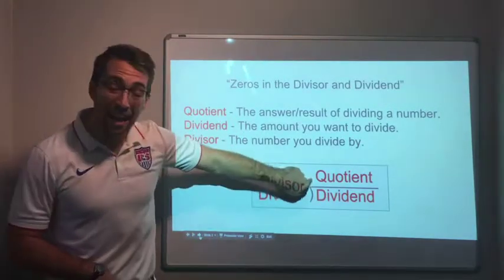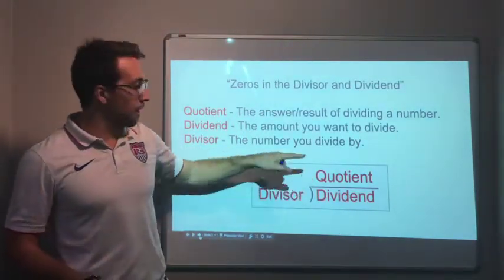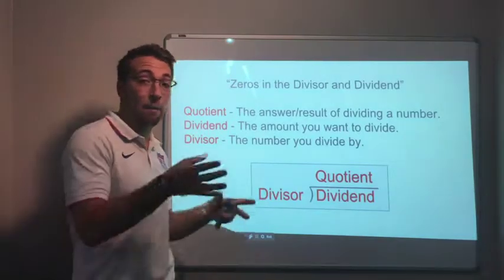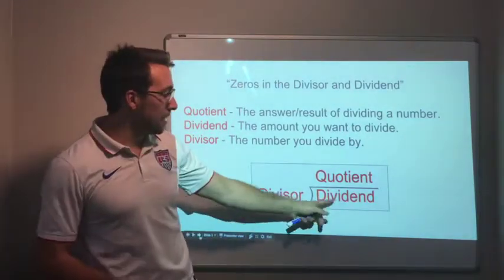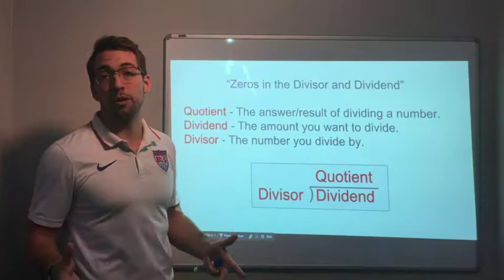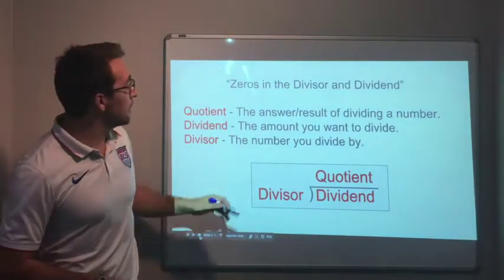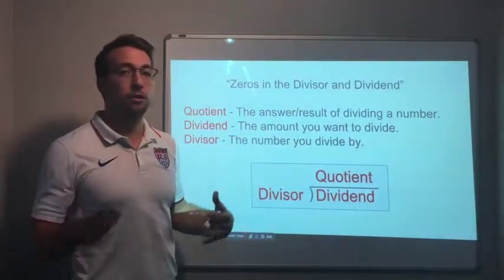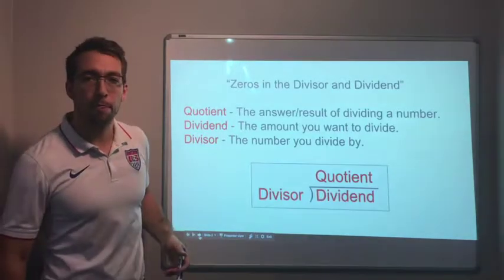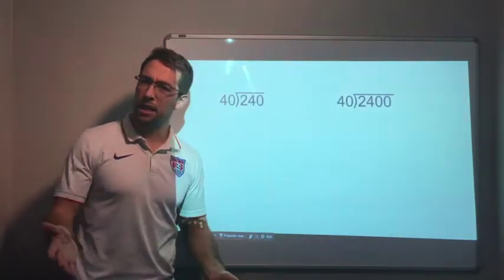Quotient, that's the answer to a division problem. The divisor, that's the number you divide by. And the dividend, that's the number you start with. The dividend is the amount that you want to divide.